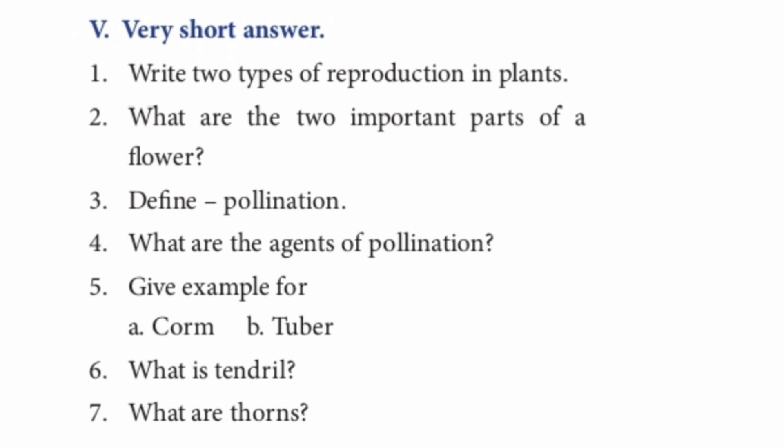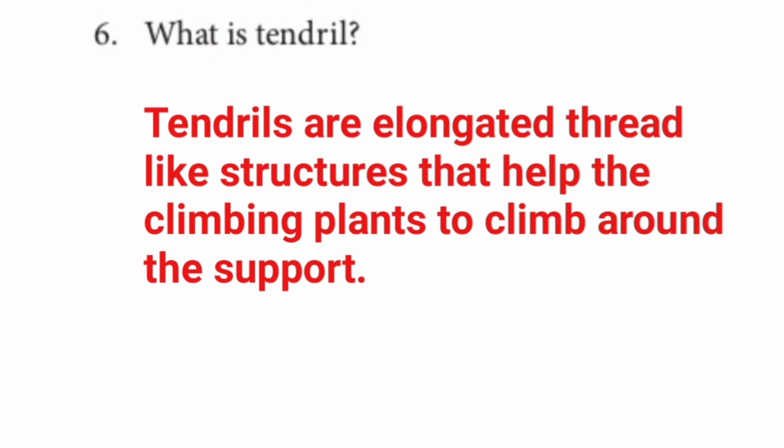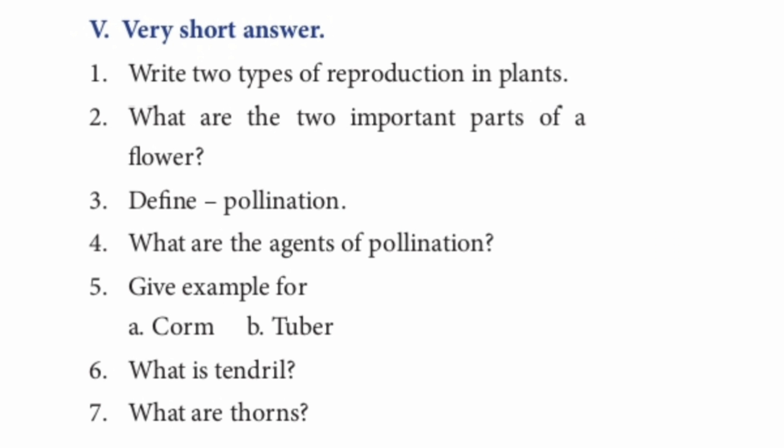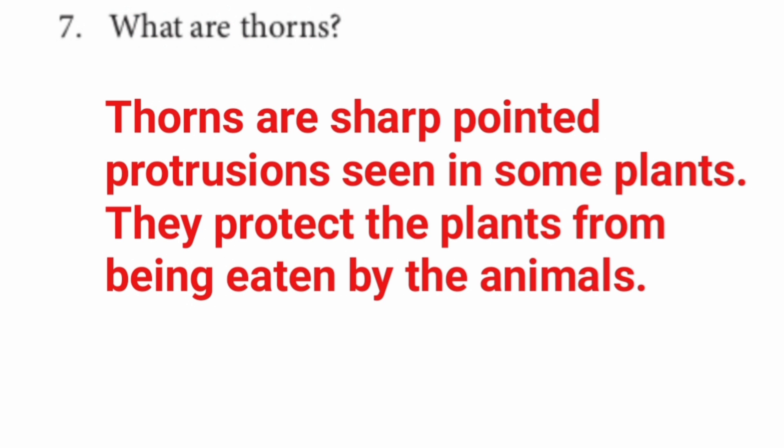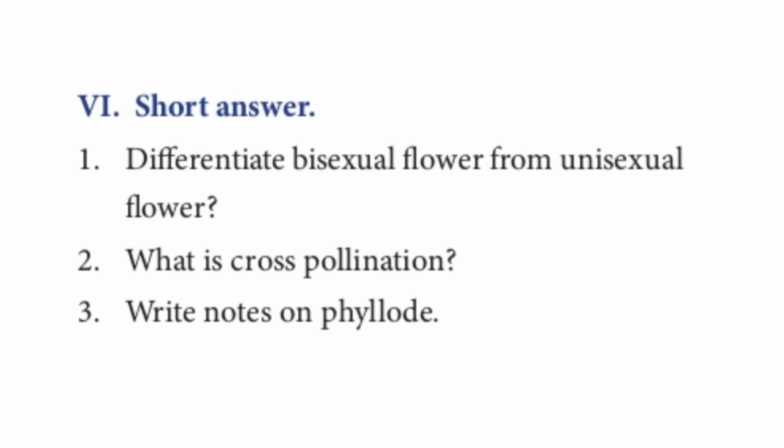Question 6: What is a tendril? Tendrils are elongated, thread-like structures that help climbing plants to climb around a support. Question 7: What are thorns? Thorns are sharp pointed protrusions seen in some plants. They protect the plants from being eaten by animals.